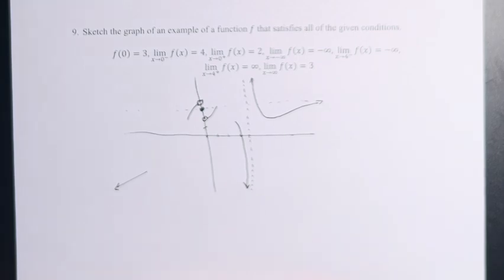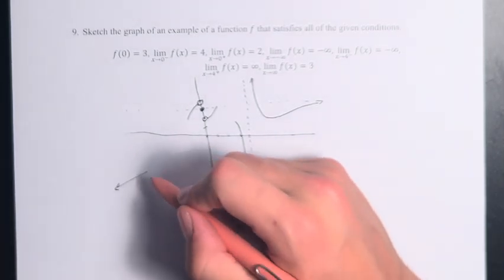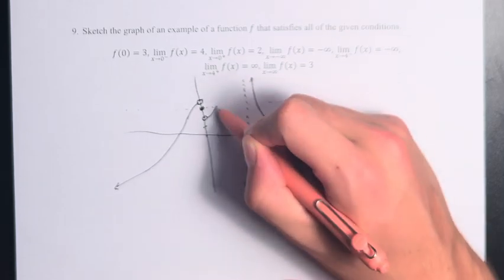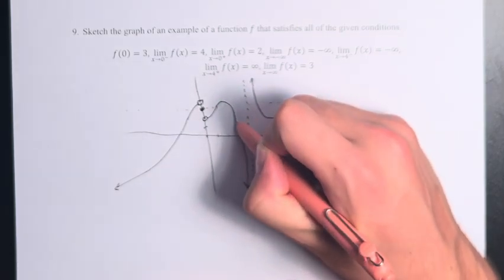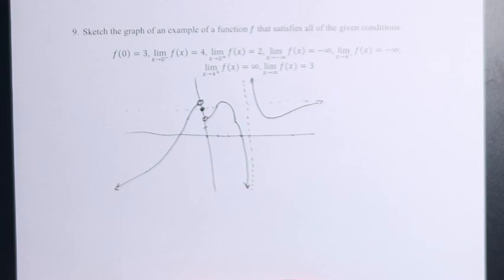Now, we have all of our limits and values satisfied, and we can just connect this in to make it look a little bit better. And there we have our function f.